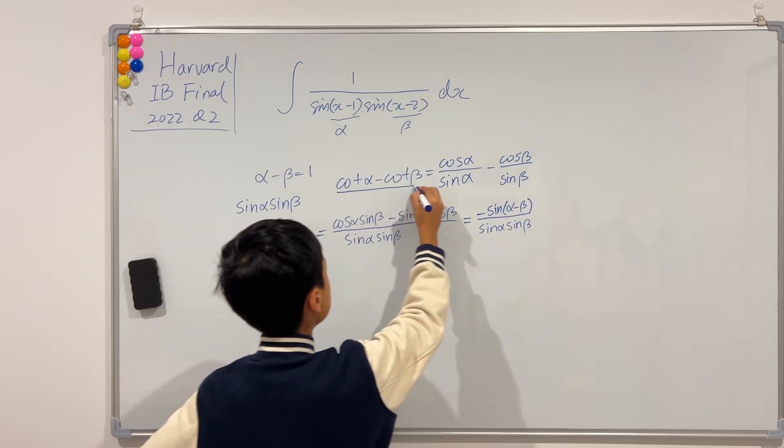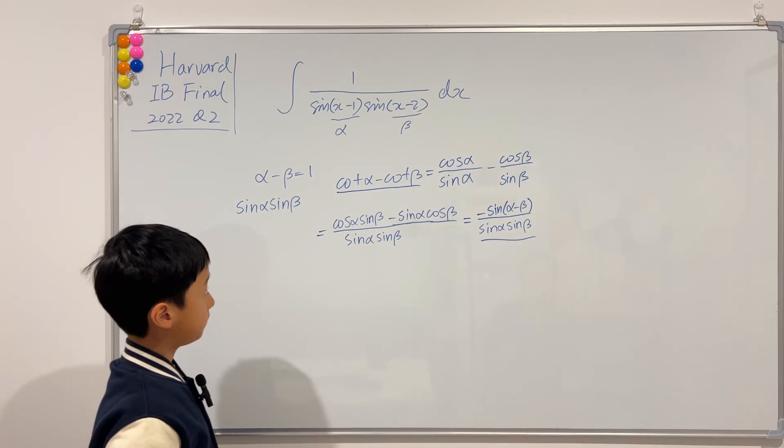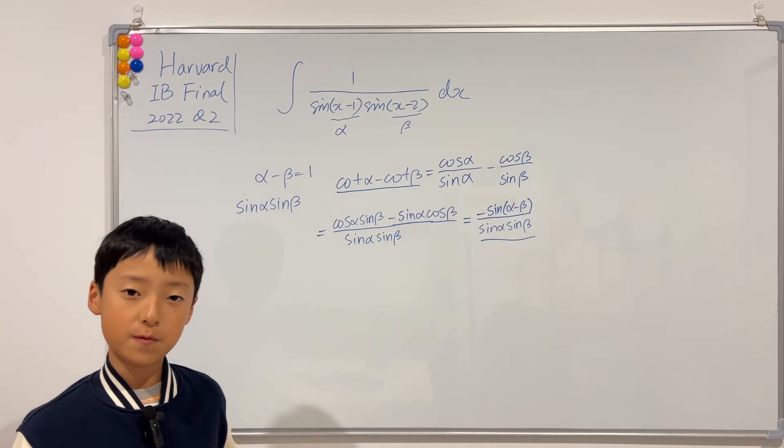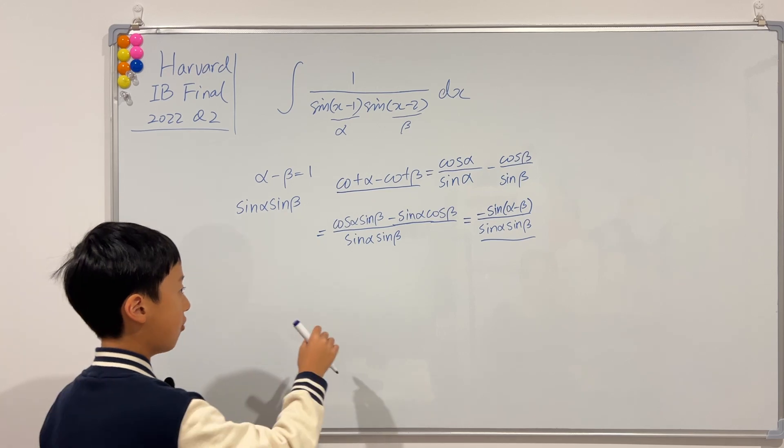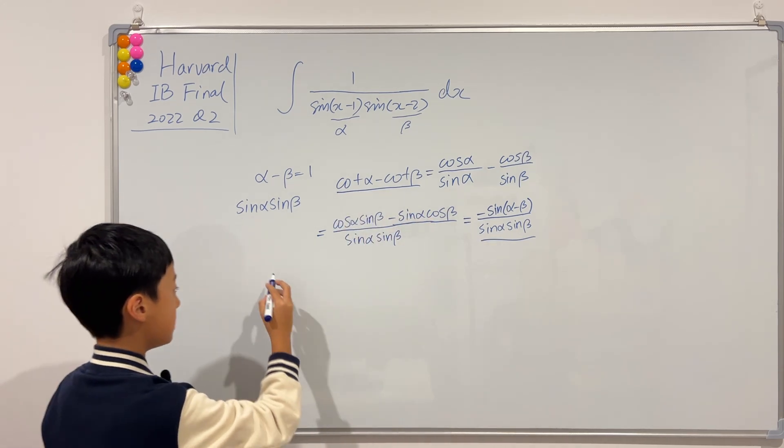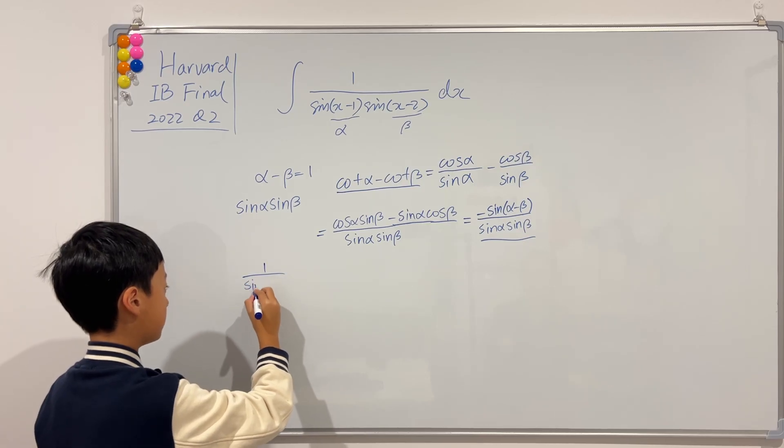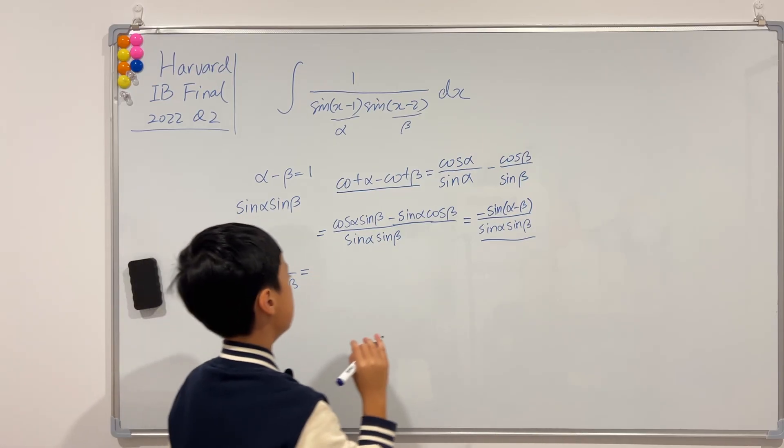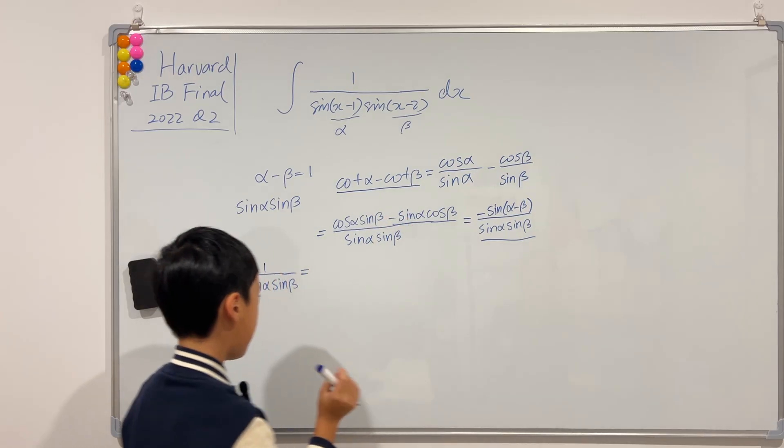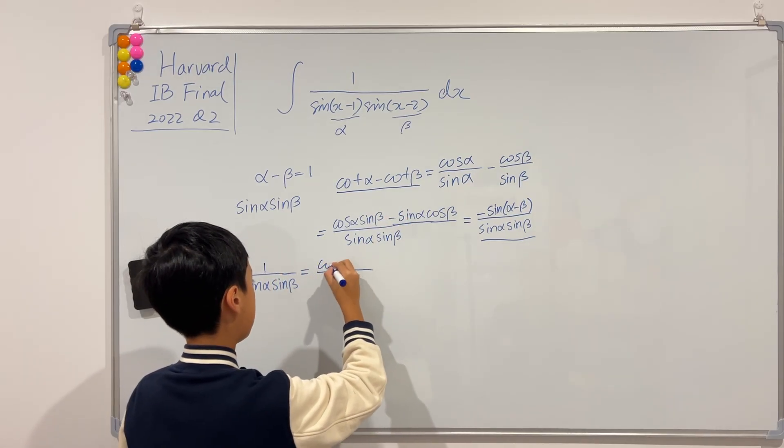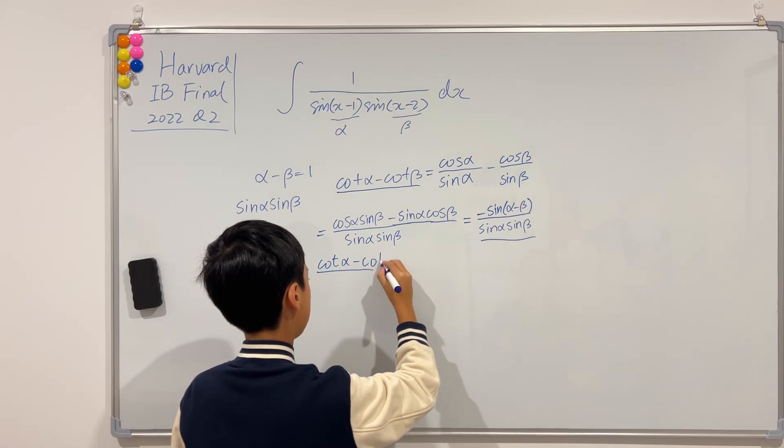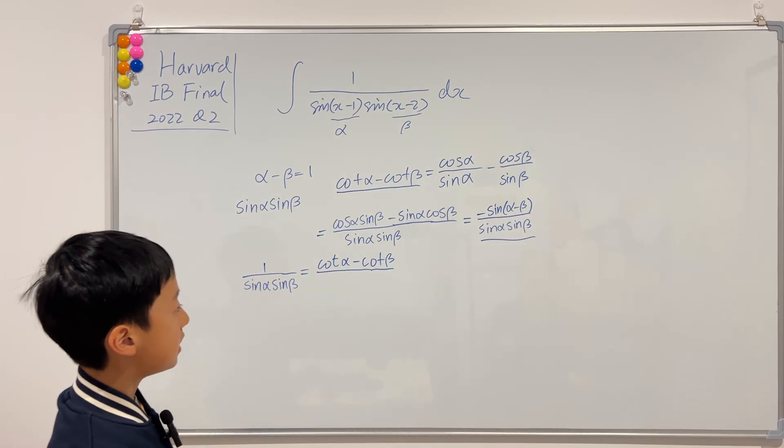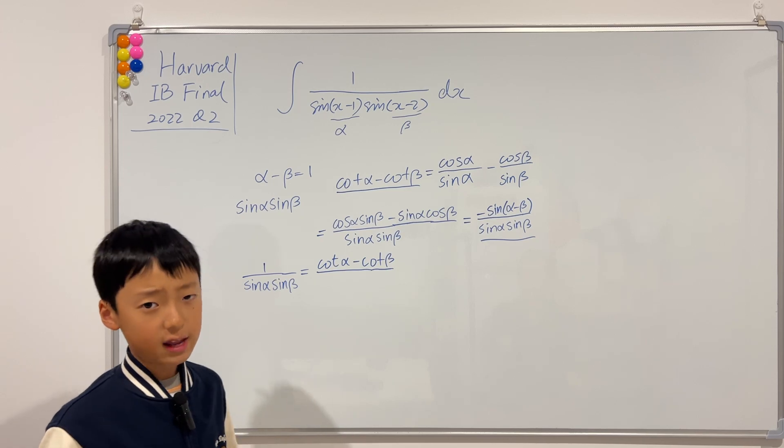So, knowing that this is equal to this, what do we do? Well, we first look at the integrand. We have 1 over sine alpha times sine beta. So, don't we want to evaluate that first? Yes. If this is equal to this, then we know that 1 over sine alpha times sine beta is equal to, well, don't we just divide this to the denominator? So, the top is still cotangent alpha minus cotangent beta, but the bottom is this. Negative sine of alpha minus beta.